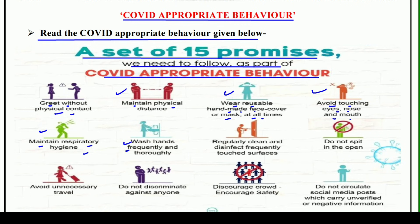Next is: wash hands frequently and thoroughly. Yaad ni, aapko apne haathon ko niyamit roop se dhote rehna hai, aur achhi tarah dhona hai — thoroughly ka matlab achhi tarah se dhona hai. Next is: regularly clean and disinfect frequently touched surfaces. Yaad ni, aap jab bhi surfaces hain — jyada touch hone wali surfaces hain — unko disinfectant se clean karte rahiye. Aur niyamit roop se, jab bhi frequently touched surface ho jisko aap zyada touch karte hain, unko aap clean aur disinfect karte rahiye.